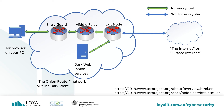Each node in the circuit creates a separate encrypted connection, meaning each node only knows of the node before it and after it. It has no concept of the originator or the destination — just the next node in line. The exit node knows how to get to the destination, but the rest of the nodes do not. This is what makes the Tor network anonymous — you can't trace a connection through it. Tor also provides the onion service protocol, which allows for web publishing or instant messaging servers, meaning users' and servers' locations are anonymous. The anonymity of the network is why black hat hackers use it to host their services.